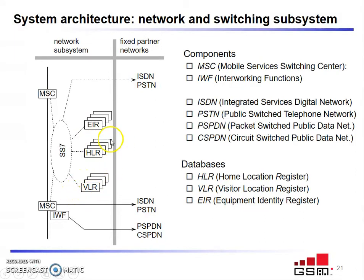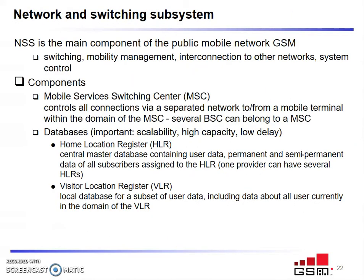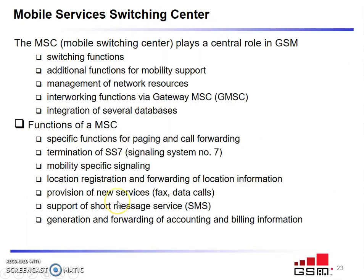The base data is present in the HLR. When a mobile moves from one location to another, the data is updated in the Visitor Location Register. Details about the mobile equipment are stored in the Equipment Identity Register, which helps in identifying the mobile unit. The network and switching subsystem is a main component of GSM, taking care of switching functions, mobility management, interconnection to other networks, and system control.